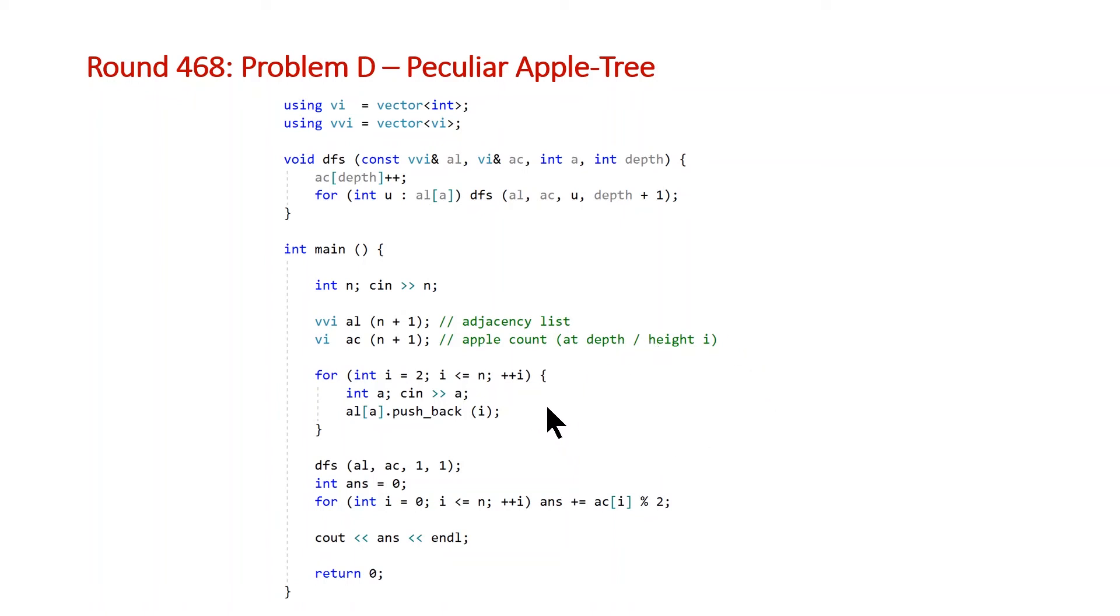And then we simply initialize the values for our apple count vector. So we're going to read in our input and then push back the current i plus 1th index. So when you have 1, 2, 2, 2, you're going to end up for index 1 we have a vector of just 2 and then for index 2 we have a vector of 3, 4, 5.